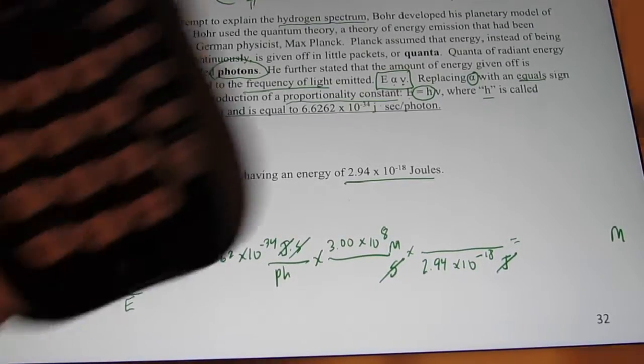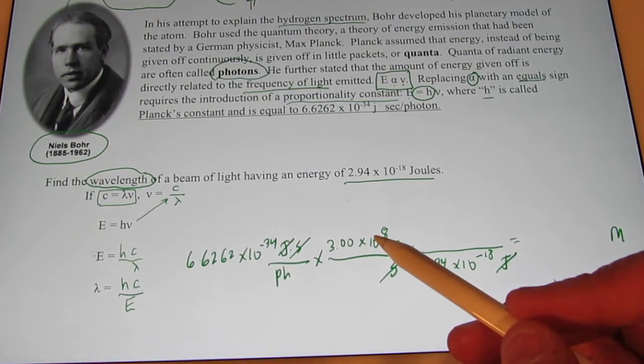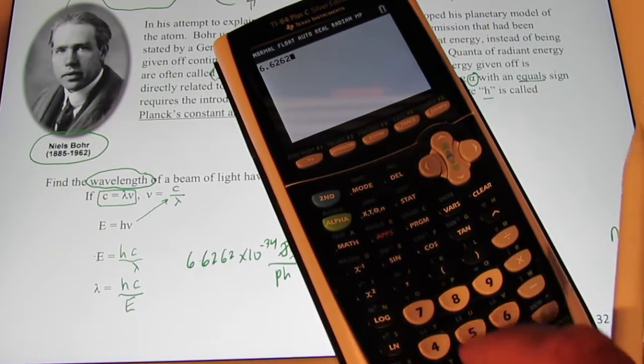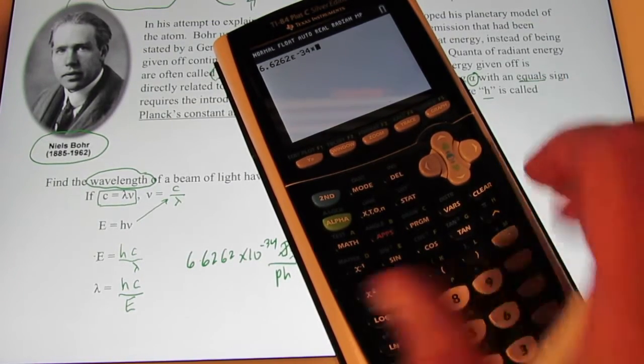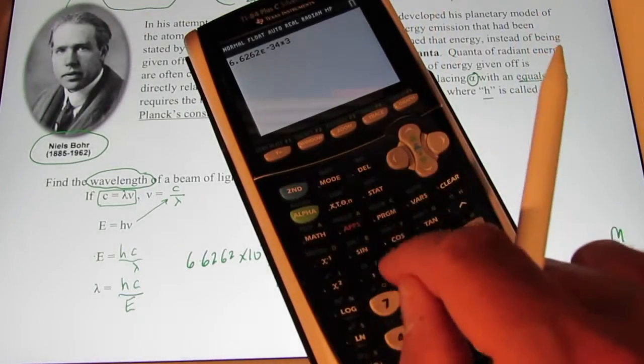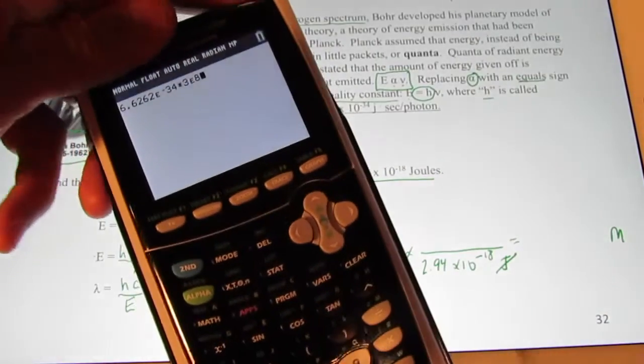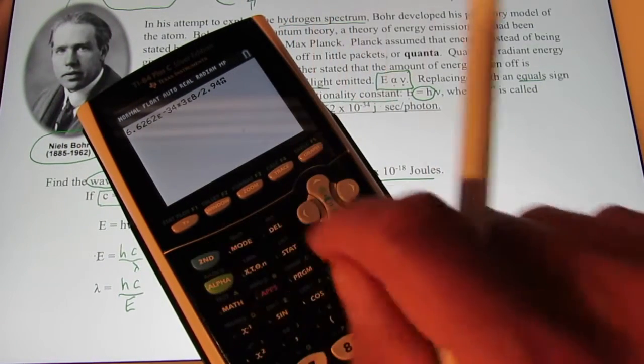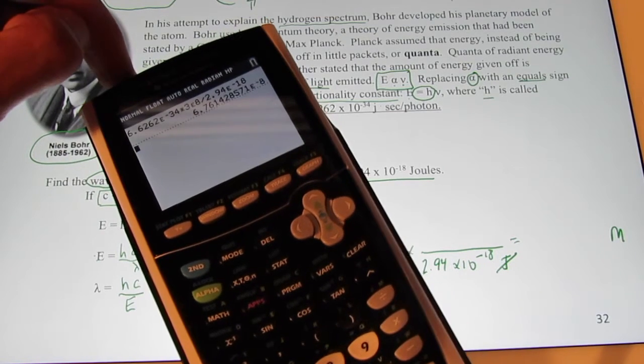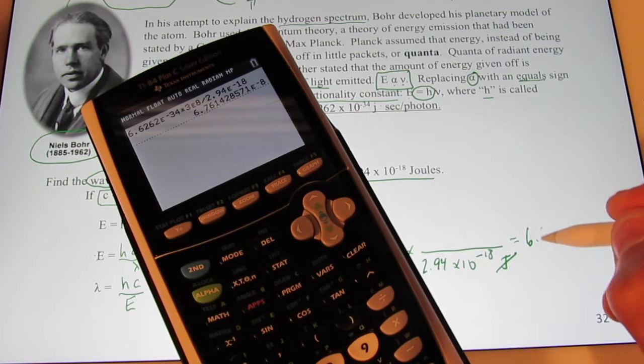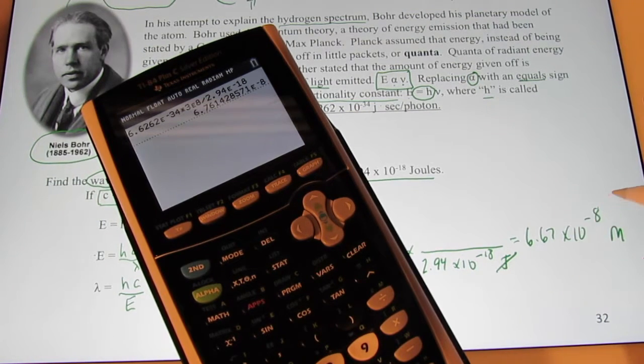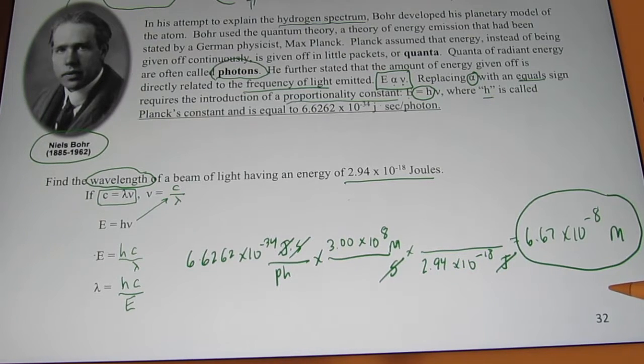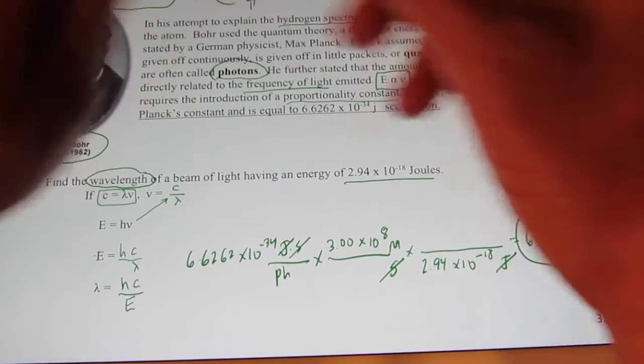So, let's find out what that is. So we'll bring in our calculator. Remember, if numbers are on top, we multiply by them. If they're on the bottom, we press divide. So we're going to start with 6.6262 second EE to the negative 34th times 3 second EE to the 8th. And then we're going to divide it by the energy. So I'll press divide it by 2.94 second EE to the negative 18th. Let's see what we get here, kiddos. We get to three significant figures. 6.76 times 10 to the negative 8th meters. So we end up with a pretty small wavelength. 10 to the negative 8th meters. So, I gave you the energy. We were able to find the wavelength.